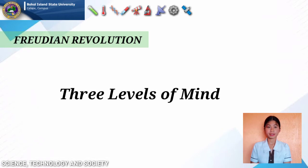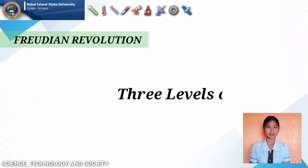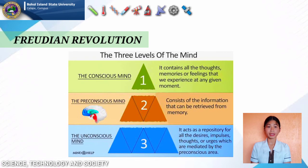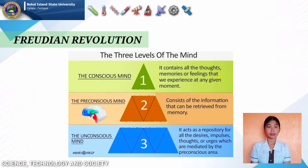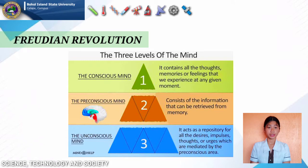Freud believed that human personalities are a result of three conflicting parts. These are the conscious mind, pre-conscious mind, and unconscious mind. The conscious mind consists of thoughts, desires, and wishes that we are aware of and can recall at any time. The pre-conscious mind is located between the unconscious and conscious mind.